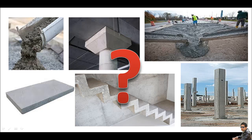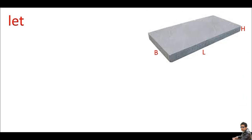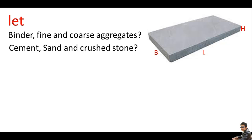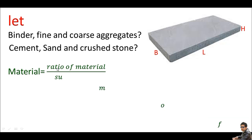Suppose you have a PCC work with length, breadth, and height — that means you have the volume. You want to calculate materials like cement, sand, and crushed stone — also called binder, fine aggregate, and coarse aggregate. Fine aggregate refers to sand, and coarse aggregate refers to crushed stone. To calculate any of these, I have a formula.